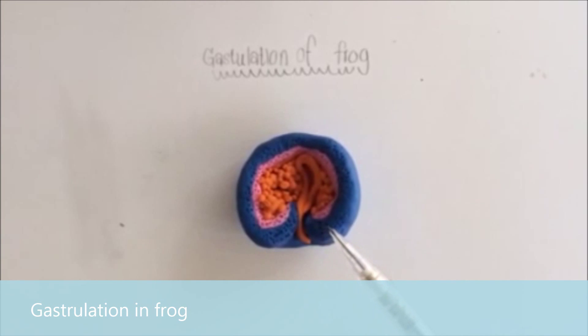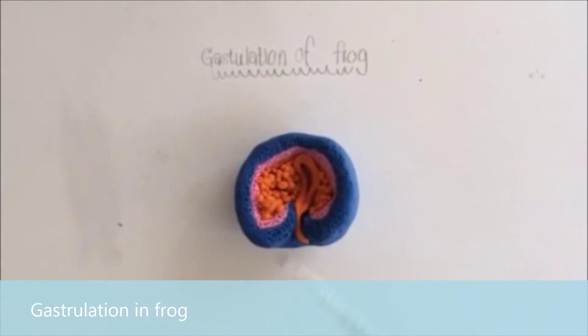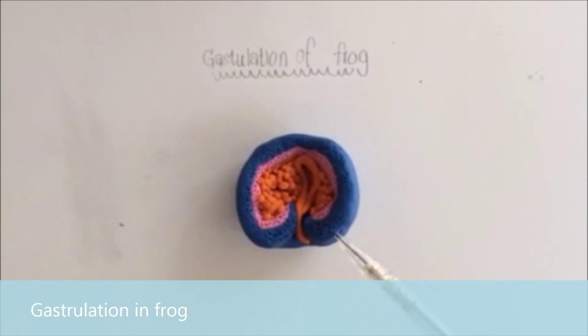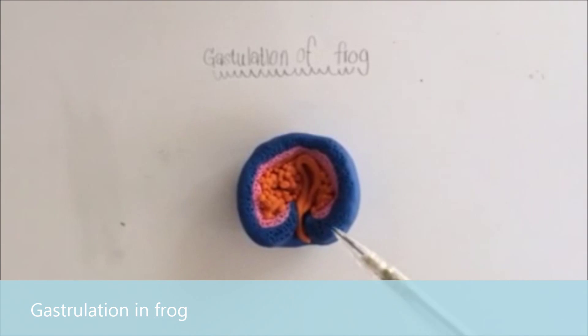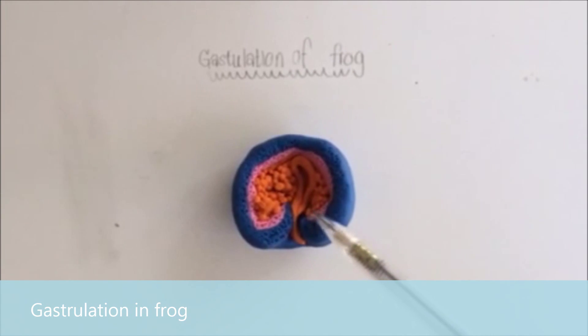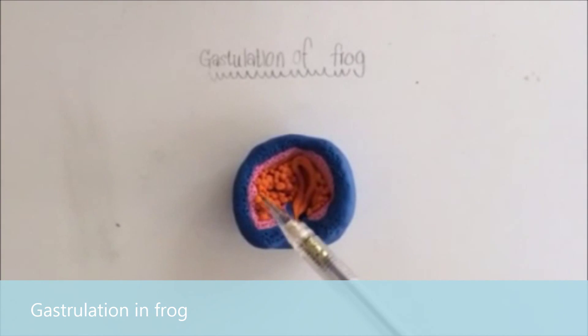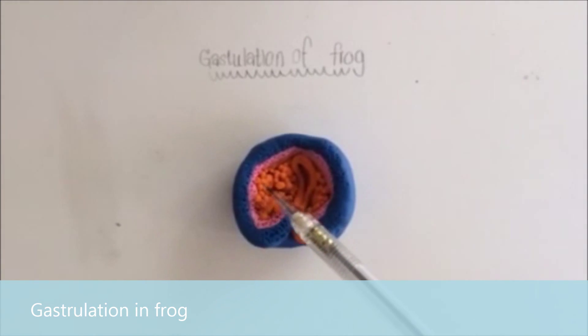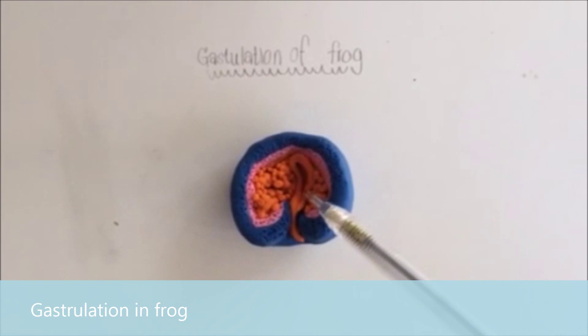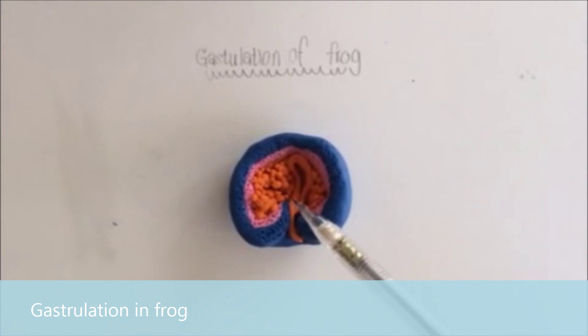It will show cell division before sale. This blue is Ectoderm. This pink is Mesoderm. And this orange is Endoderm. In the central cell is the Archenteron.